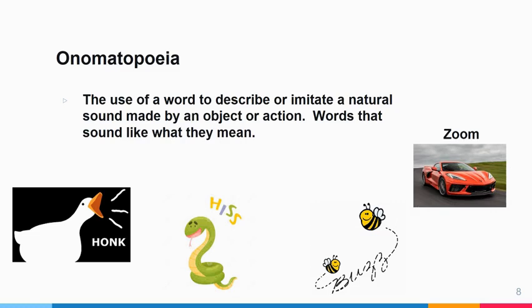An onomatopoeia is the use of a word to describe or imitate a natural sound made by an object or action — these are words that sound like what they mean. For example, hiss is the sound a snake makes, buzz is the sound a bee makes, or a car goes zoom. All of those words are onomatopoeias.